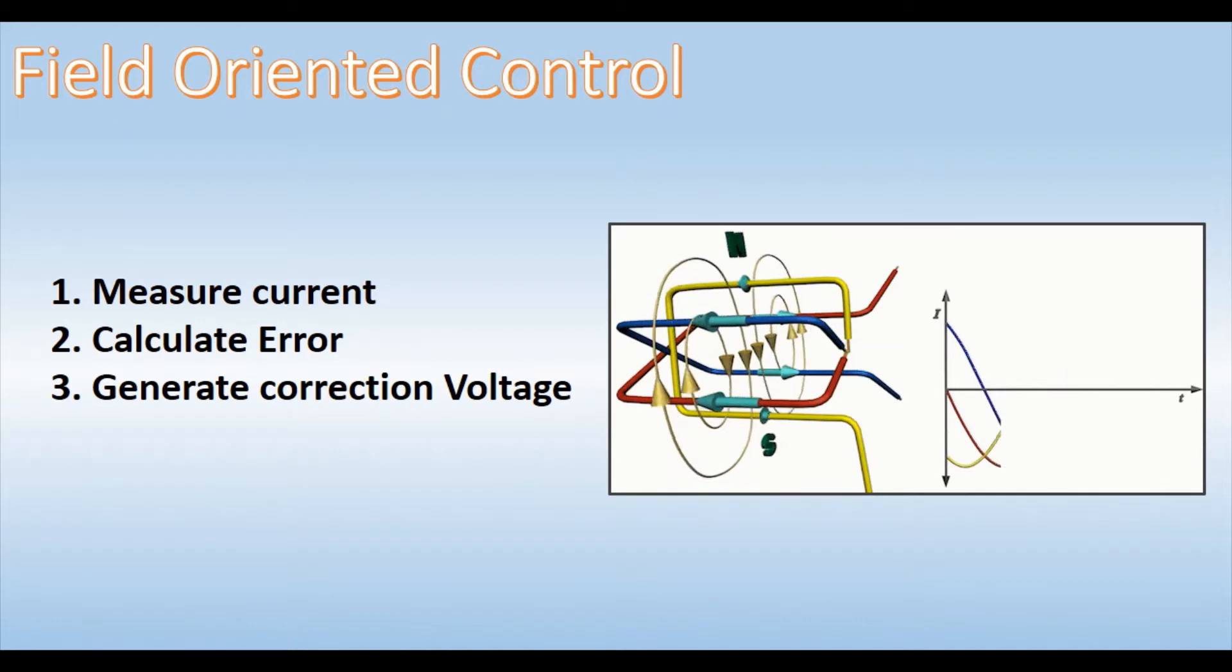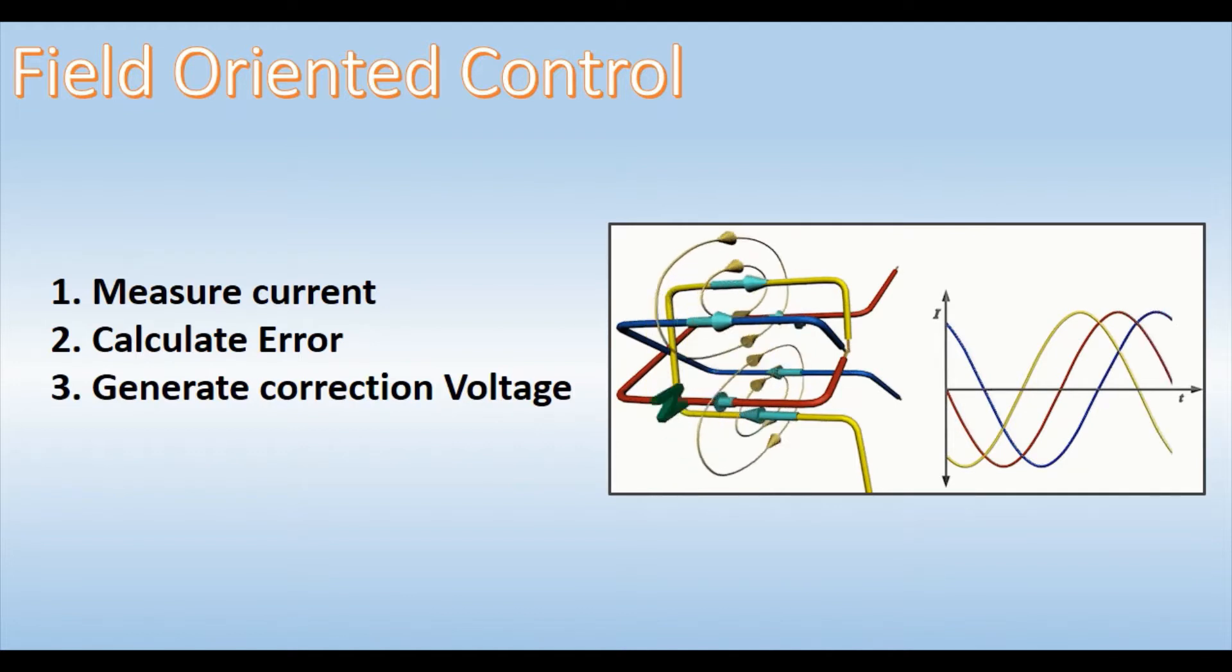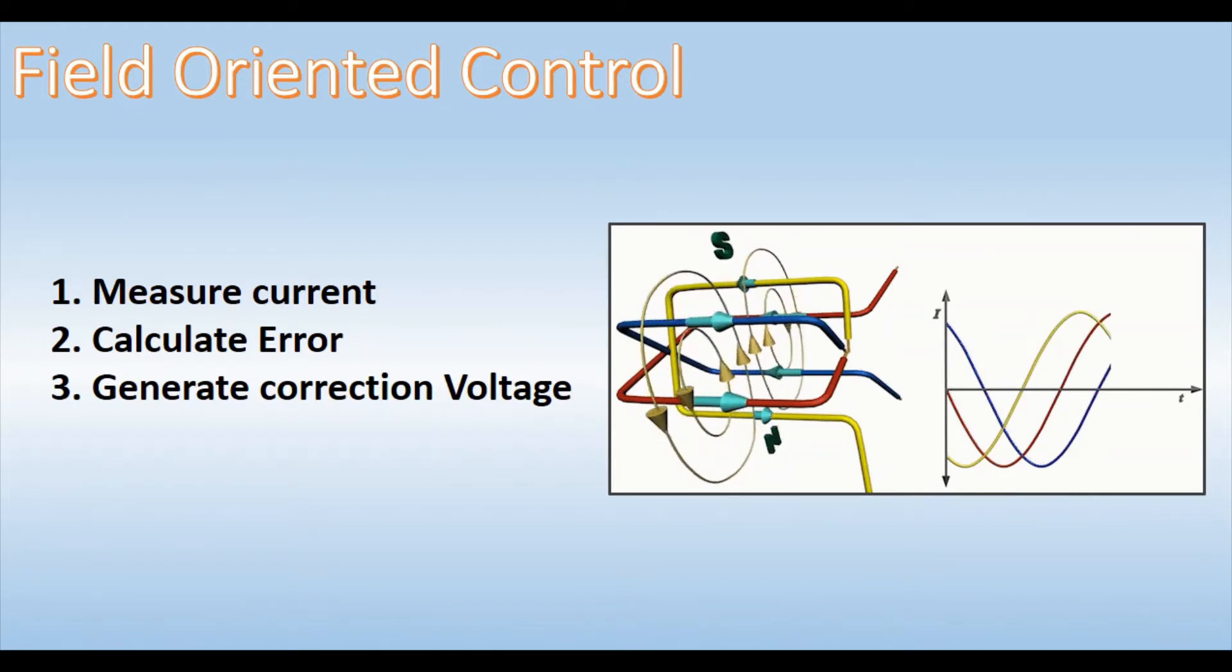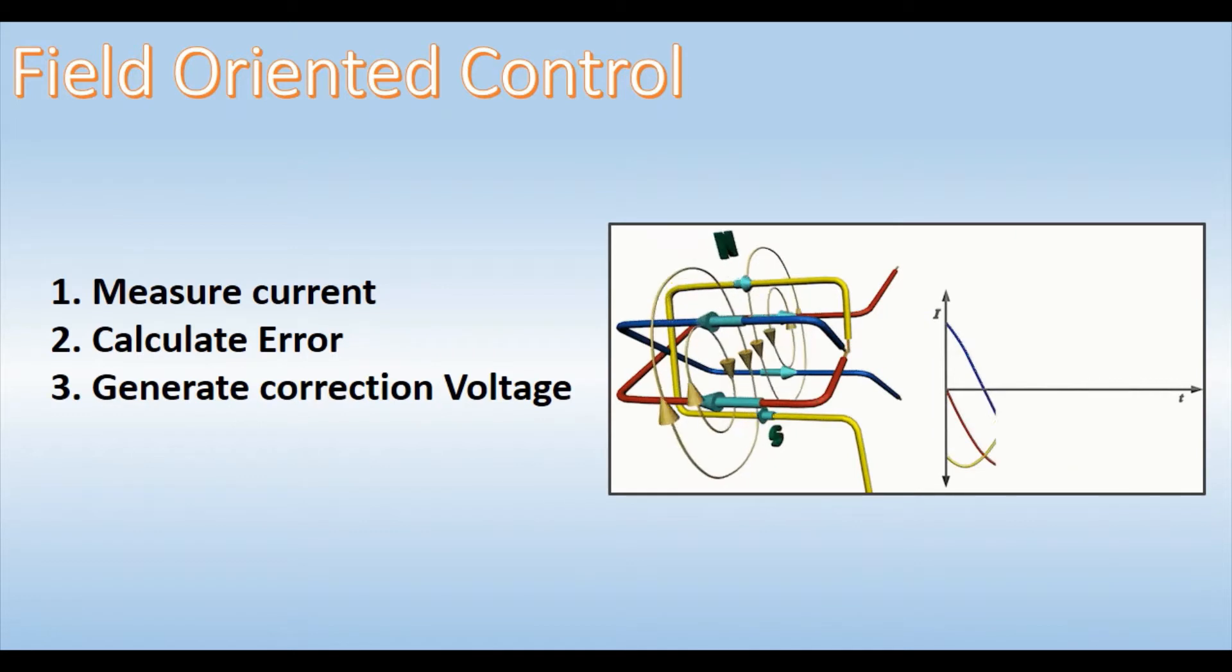First step is to measure the current that's flowing in the motor. In this case, a shunt resistor is feeding an A to D converter to take a sample of the current reading. Second step, compare the measured current with the desired current and generate error signal. And then finally, modulate the correction voltage onto the motor terminals.